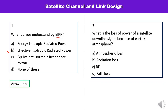Second question: what is the loss of power of a satellite downlink because of Earth's atmosphere? You have derived the equation where the path loss term exists. Path loss is written as (4πr/λ)², so the correct option is D.